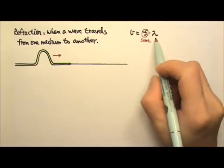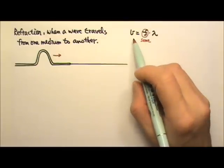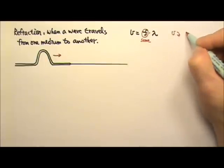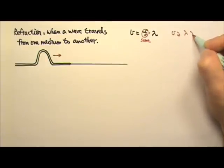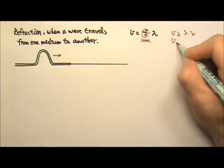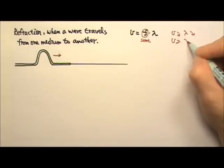This means the wavelength will have to change according to the speed. If the wave slows down, the wavelength has to get shorter. If the wave speeds up, the wavelength gets longer.